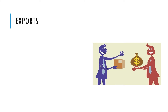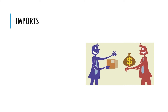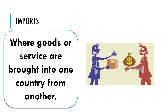Two key terms we need to understand are exports and imports. Exports are where goods and services produced by one country are sold to another country — it's worth bearing in mind that exports involve products leaving the country but money entering the country. On the flip side, imports are where goods or services are brought into one country from another, involving goods coming in and money leaving the country.